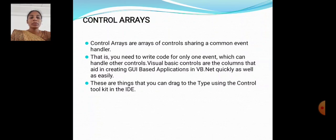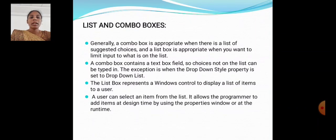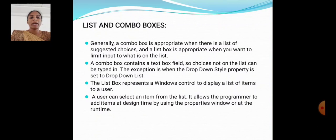List and Combo Boxes: generally, a combo box is appropriate when there is a list of selection choices, while a list box is appropriate when you want to limit input to what is on the list. The combo box contains a text box field, so choices from the list can be typed in, except when the drop-down style property is set to drop-down list. The list box represents a Windows control to display a list of items to a user. A user can select an item from the list, and it allows the program to add items at design time using the Properties window or at run time.